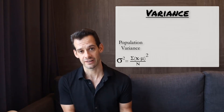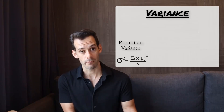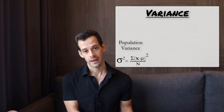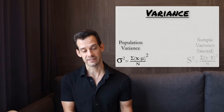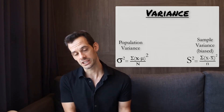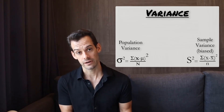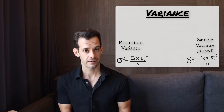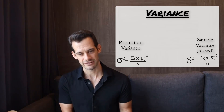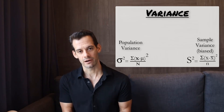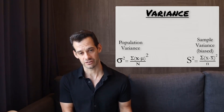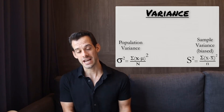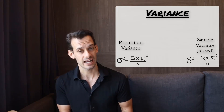But usually we don't have access to the full population, which means we don't even know what mu is. Instead, all we have is the mean of our sample, x-bar. We could say: if we're calculating from a sample, just replace mu with x-bar, giving us s² = the sum of squared deviations from x-bar divided by n. But it turns out this is actually going to be an underestimate — when we replace mu with x-bar we have a tendency to underestimate the variance of the population, giving us a biased estimate. So we generally don't use this formula.